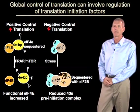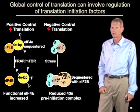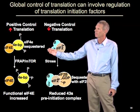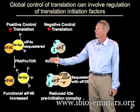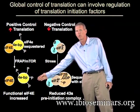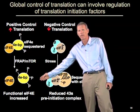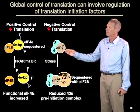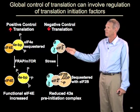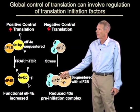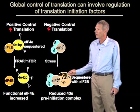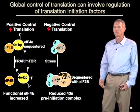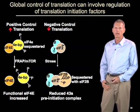Translation can also be regulated globally by alterations in the functions of specific initiation factors. For example, when growth is stimulated, the TOR pathway is enhanced, leading to phosphorylation of a protein that binds the cap binding protein. When that protein is phosphorylated, it releases the cap binding protein, resulting in more cap binding protein that promotes the loading of initiation factors on the 5' end of mRNAs, generally increasing translation. Similarly, during a wide variety of stresses, the initiation factor EIF2 — involved in delivering the initiator tRNA to the ribosome — gets phosphorylated. When phosphorylated, it gets stuck in a GDP-bound form with a translation factor called EIF2B, which reduces your ability to form 43S pre-initiation complexes. So there is global control of translation by phosphorylation or modification of various key translation factors.